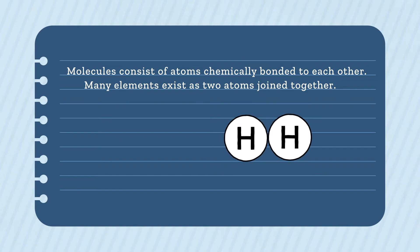We can represent molecules with a chemical formula. For hydrogen, the chemical formula would be H2. This shows that the molecule contains two hydrogen atoms.